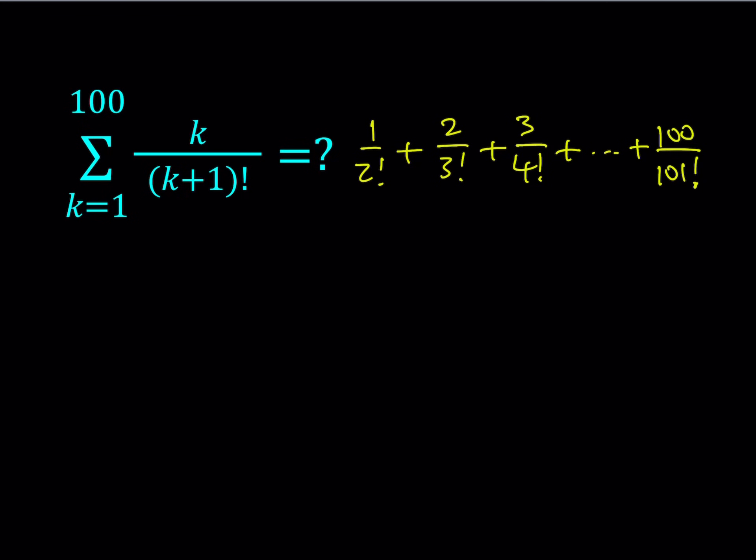The trick involves manipulating the k. Since I have k plus 1 factorial at the bottom, I would like to add 1 and subtract 1. So, write the k as k plus 1 minus 1, which is legitimate, right? And then, of course, divide it by k plus 1 factorial.